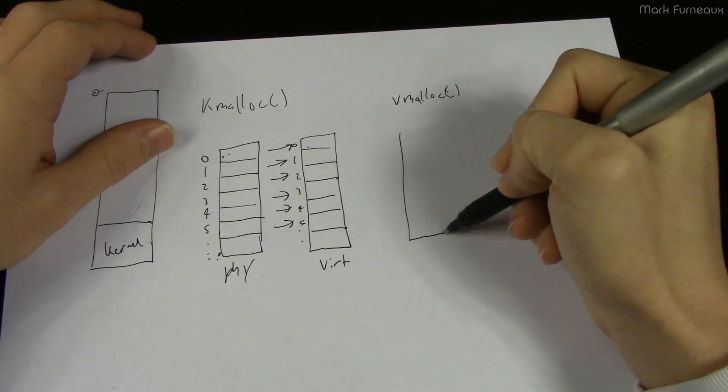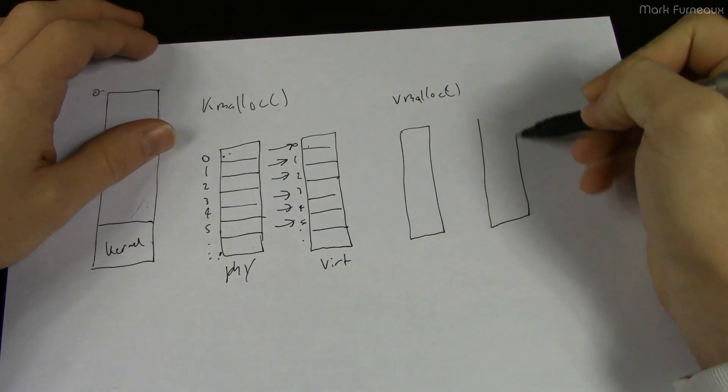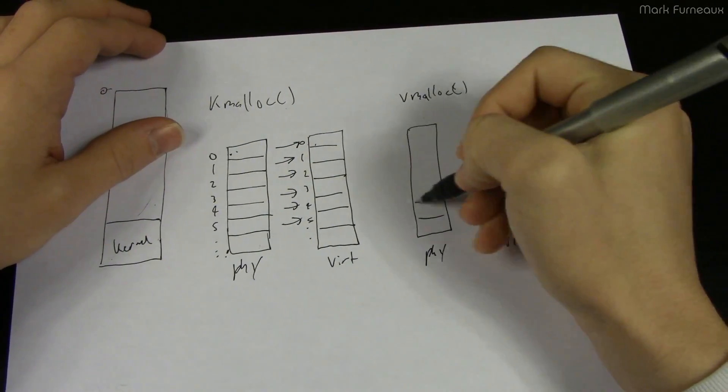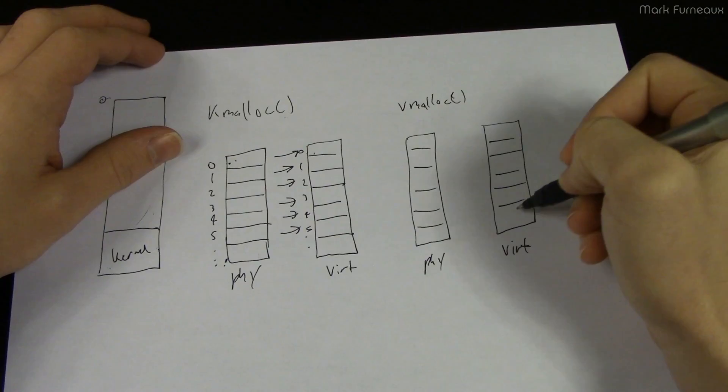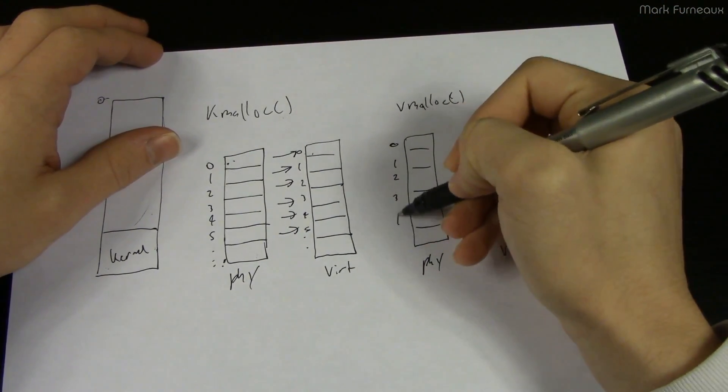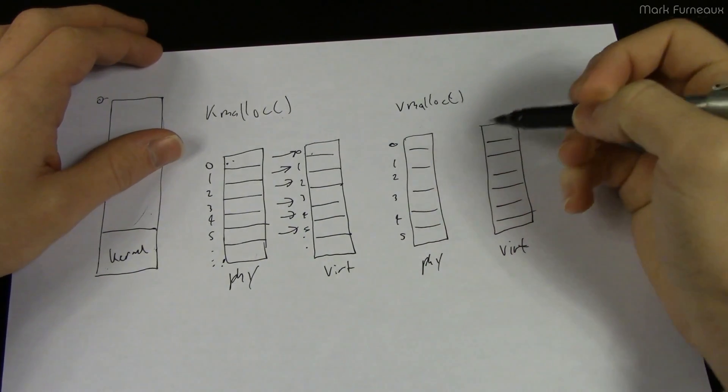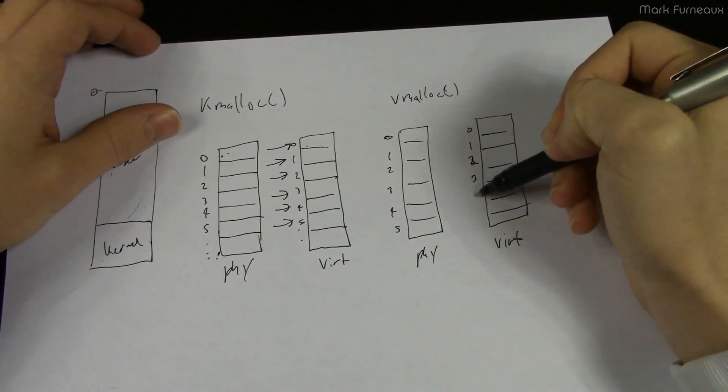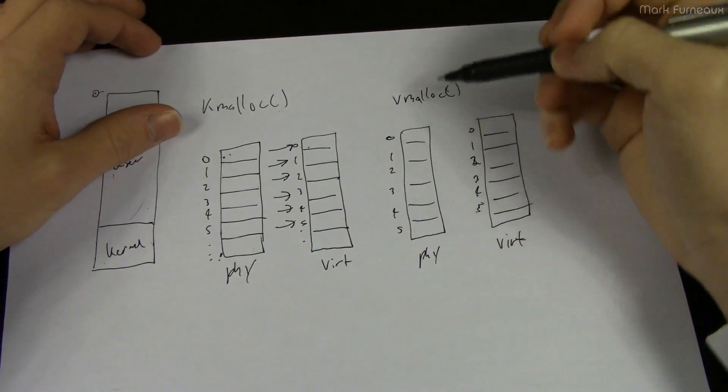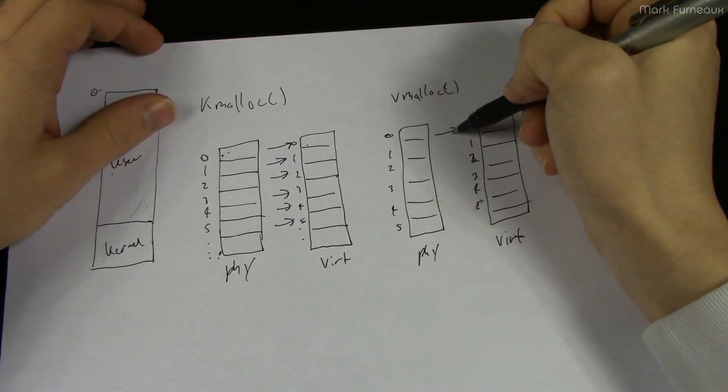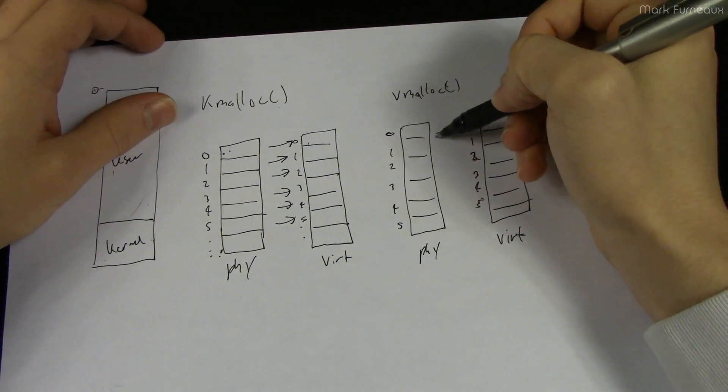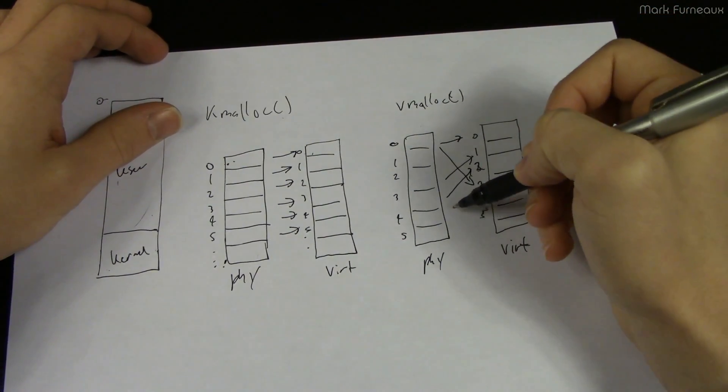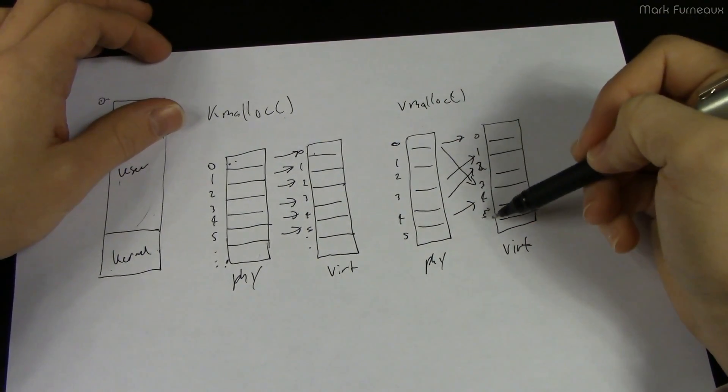The difference between kmalloc and vmalloc is that vmalloc allocates memory that is contiguous in virtual address space but not contiguous in physical address space. So what that means is if we have our virtual address space here and our physical address space here, basically the mapping is not one-to-one. So they could be one-to-one or this could be mapped here and then this could be mapped here and we could just totally skip this one. You kind of get the idea, it's all over the place.